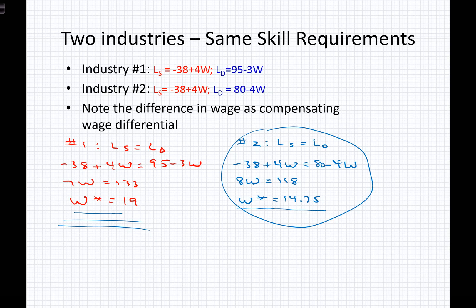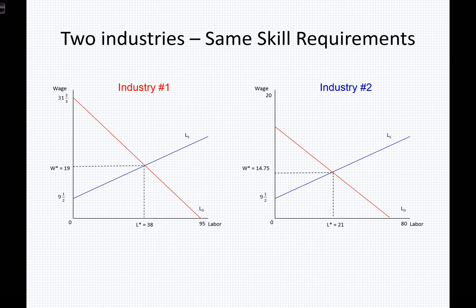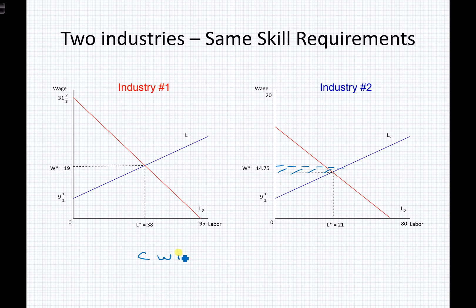Firm one pays a higher wage and may feel it doesn't need to provide other benefits — vacation, health insurance, sick leave — or as nice a working environment. The wage difference between these two firms is $4.25 per hour, and that wage difference is the compensating wage differential. We can see in basic market models that telegraphing the $19 wage over to the other firm illustrates the size or value of this compensating wage differential: $19 minus $14.75 equals $4.25 per hour.